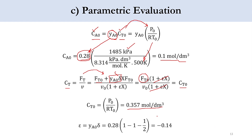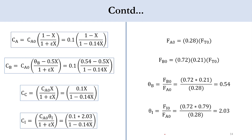Finally, epsilon ε = yA₀ · σ, where yA₀ = 0.28 and σ = (C/A) − (B/A) − 1 = 1 − 0.5 − 1 = −0.5. So ε = 0.28 × (−0.5) = −0.14. Therefore, CA = 0.1 × (1 − X)/(1 − 0.14·X).